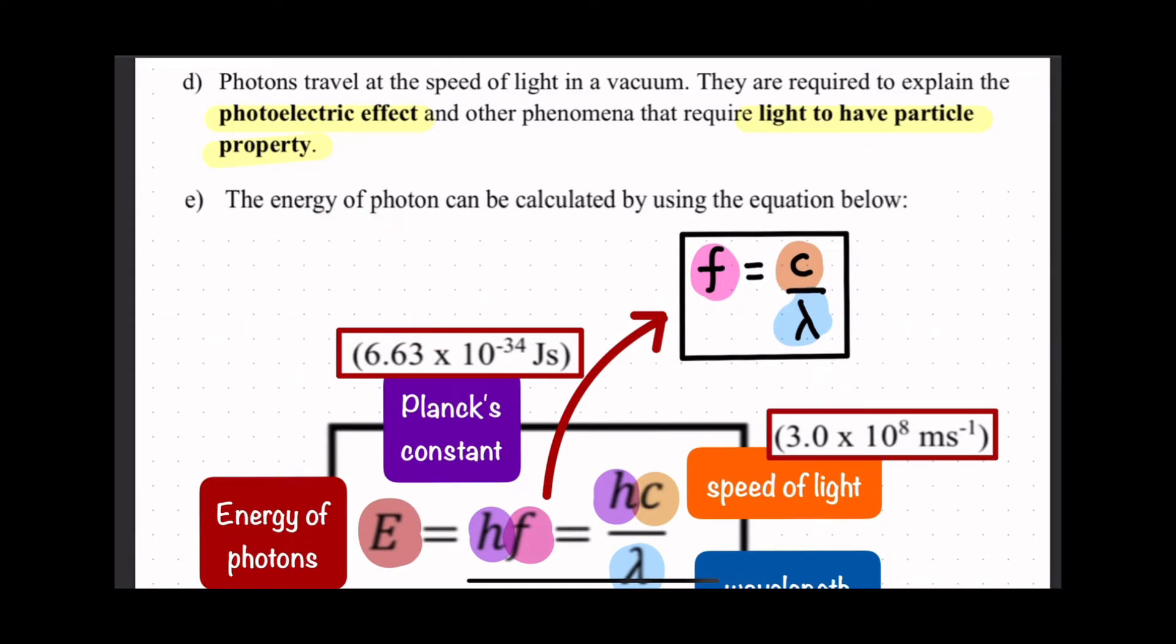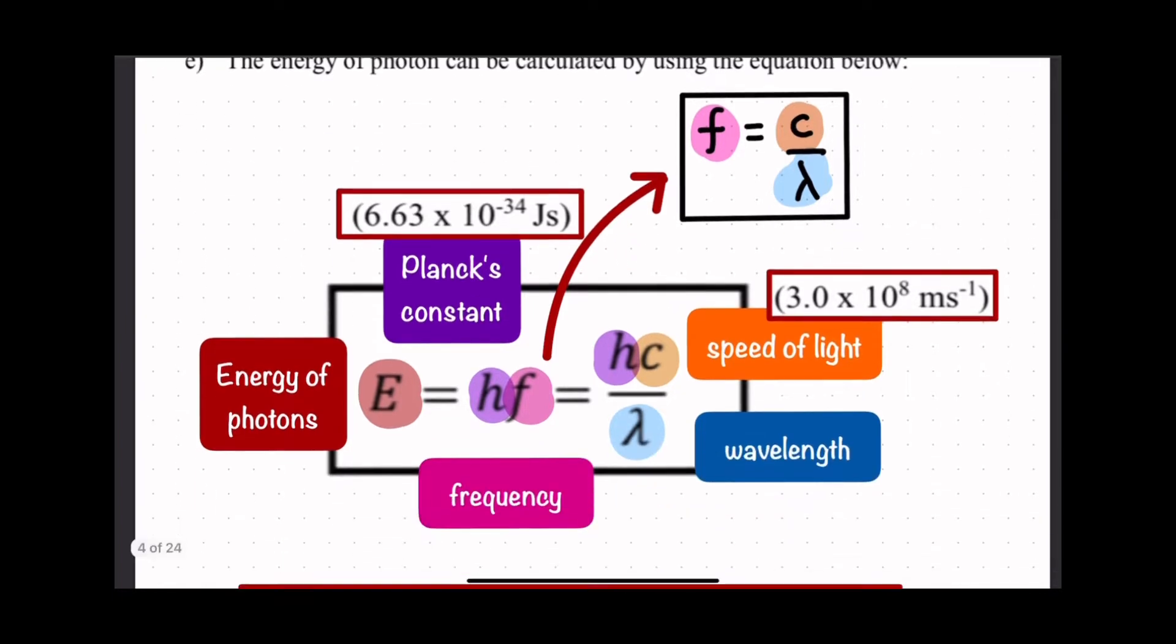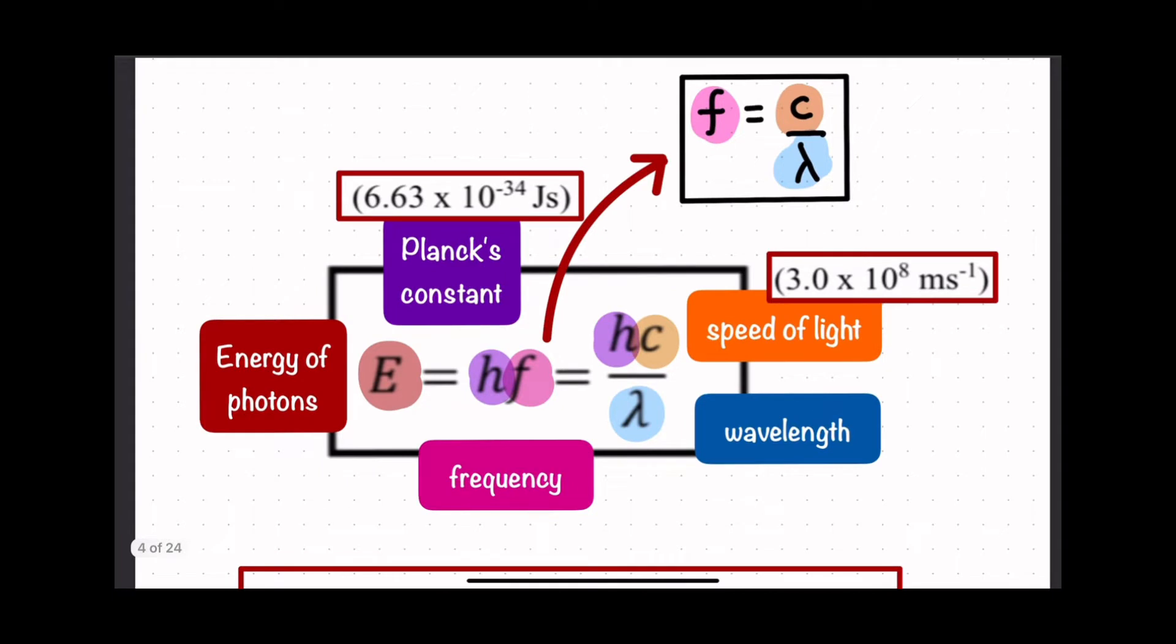This is a very famous equation for this chapter where energy of photon is equal to h times frequency. h is Planck's constant with value 6.63 times 10 to the power of negative 34 joule-second, where f here is equal to frequency.